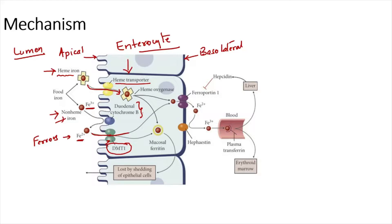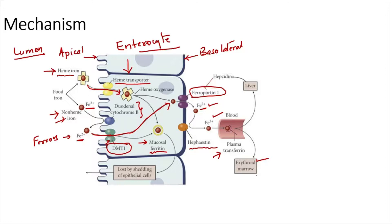Once inside the enterocyte, iron can either be stored as mucosal ferritin — the storage form of iron — or it can be transported across the basolateral membrane via ferroportin 1. Once effluxed out of the enterocyte, the Fe2+ form is converted back to Fe3+ by hephaestin, situated in the basolateral membrane. This Fe3+ is then transported in the blood bound to plasma transferrin, and goes to the erythroid marrow for synthesis of hemoglobin and RBCs.